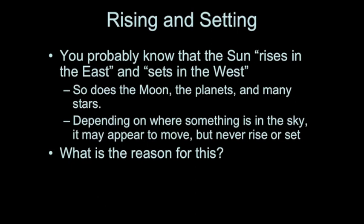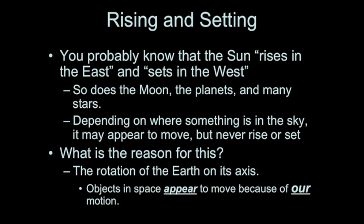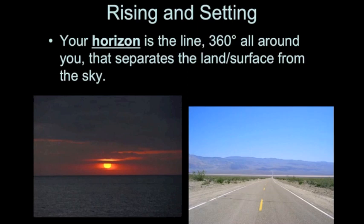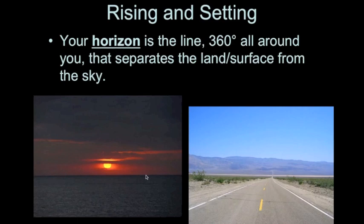Rising and setting is always relative to what is called your horizon, which is a line 360 degrees all around you that separates the land or surface from the sky — as far as your eye can see. Sometimes your horizon is blocked because there might be higher elevation features on the surface, such as mountains.